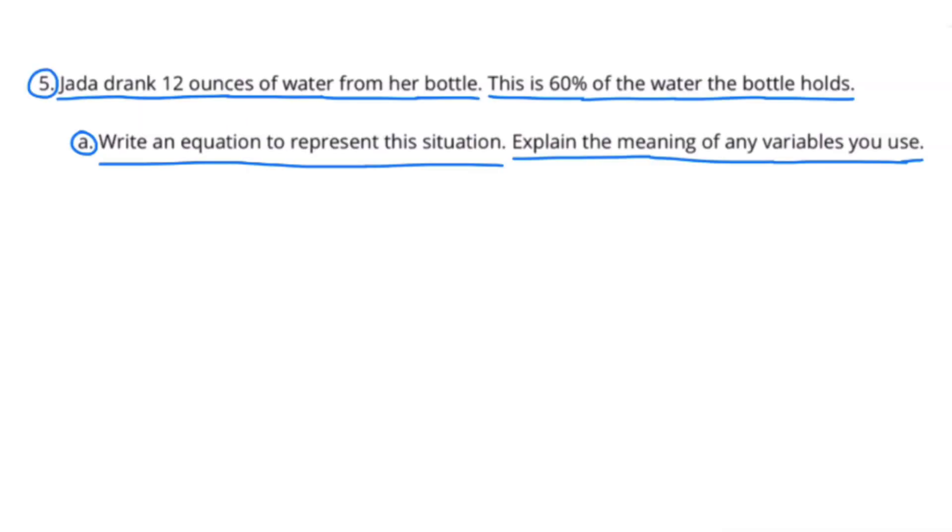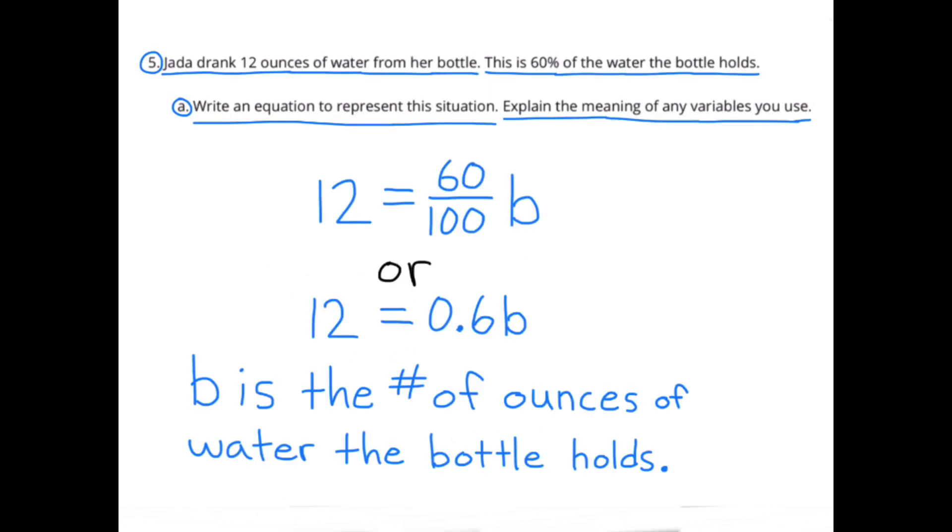Number 5. Jada drank 12 ounces of water from her bottle. This is 60% of the water the bottle holds. A. Write an equation to represent this situation. Explain the meaning of any variables you use. I came up with 12 = 60/100 b, or 12 = 0.6b. Both 60/100 and 0.6 represent 60%, and b is the number of ounces of water the bottle holds.